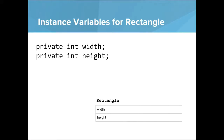Now let's look at the instance variables for rectangle. We have a rectangle with a width and a height, and for now we'll say that the width is an int and the height is an int. So we write private int width, private int height.